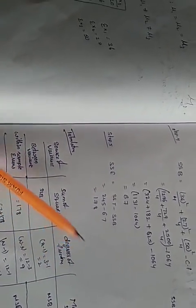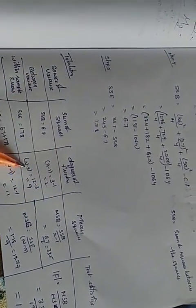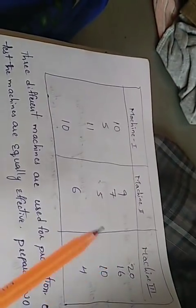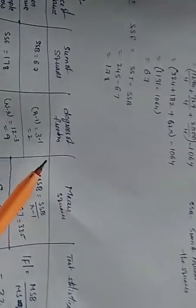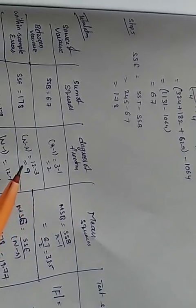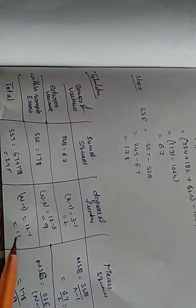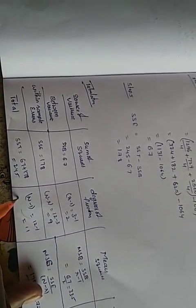Degrees of freedom: for between samples, it is k minus 1, where k is the number of groups. Here k equals 3, so degrees of freedom between equals 2. For within samples (errors), it is n minus k, where n equals 12 and k equals 3, giving 9. Total degrees of freedom equals 2 plus 9 equals 11, which is n minus 1.